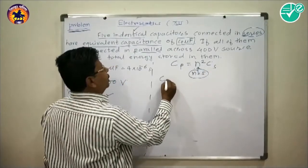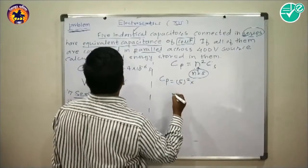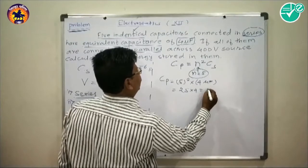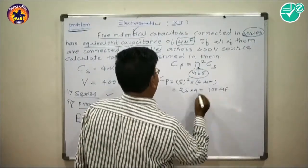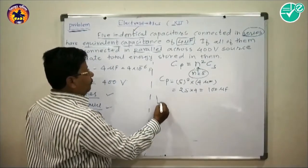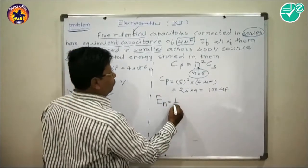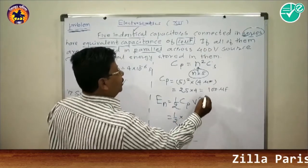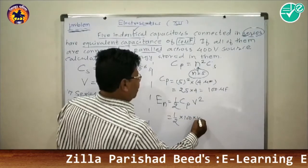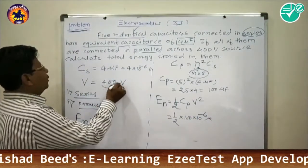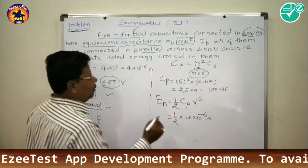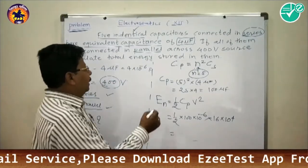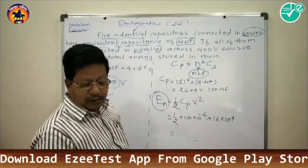When connected in parallel, the energy stored is E = ½CpV² = ½ × 100×10⁻⁶ × (400)² = ½ × 100×10⁻⁶ × 16×10⁴ = 8 joules.